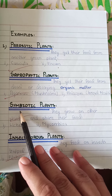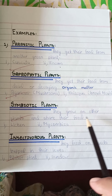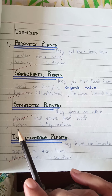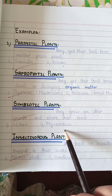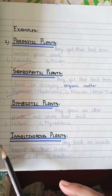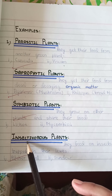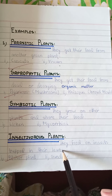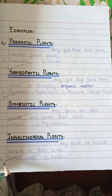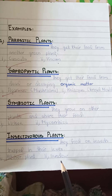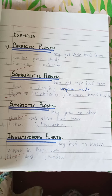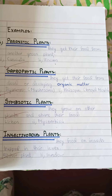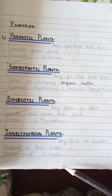Number three is symbiotic plants — they grow on other plants and share their food; examples are lichen and mycorrhiza. Number four is insectivorous plants — they feed on insects trapped in their leaves; examples are pitcher plant and sundew. Here your answer number one is completed.